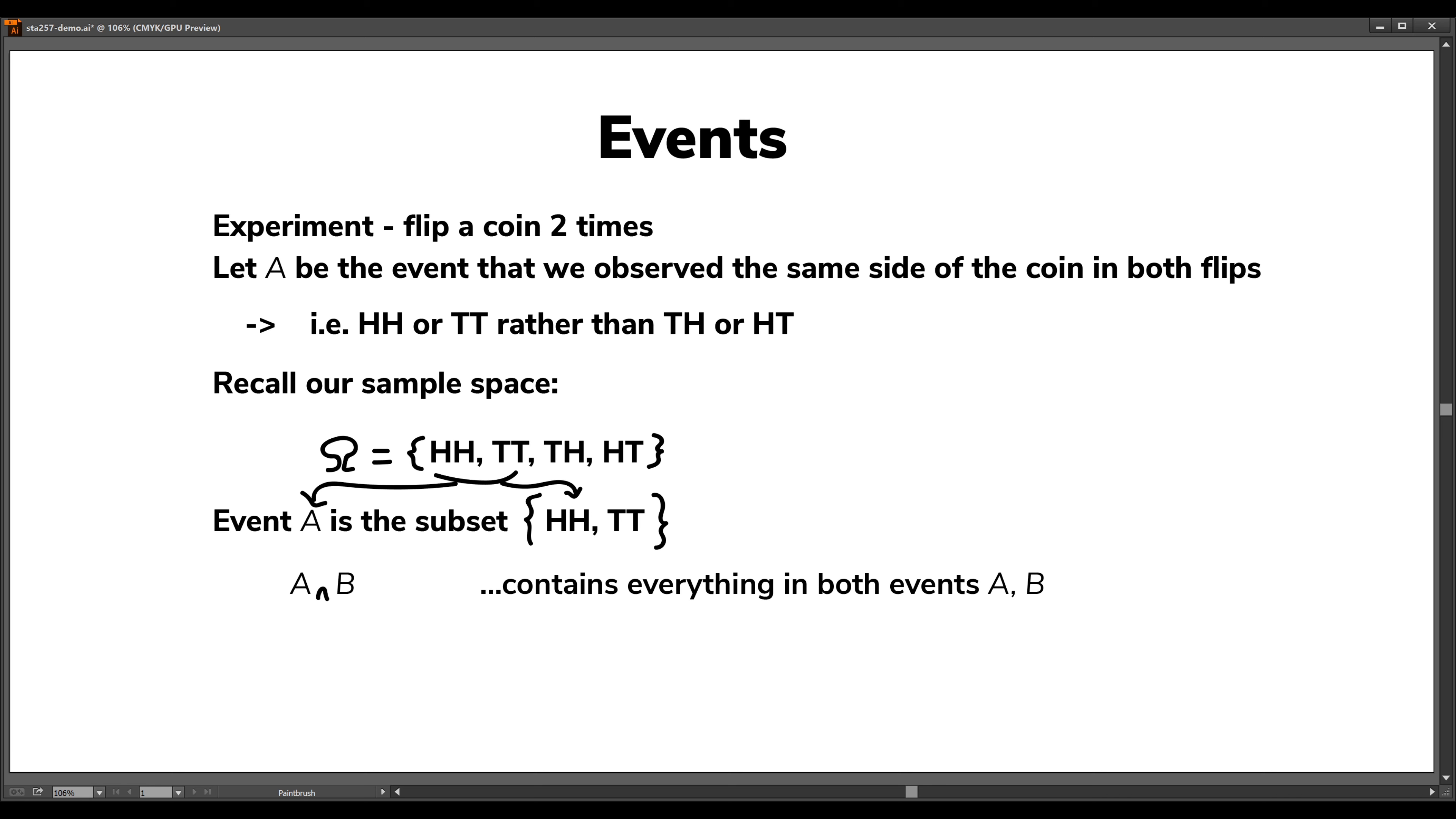Now we have these different things we can do between different events, which includes taking the intersection. So the intersection of some events A and B, this would contain everything that is in both events A and in event B.